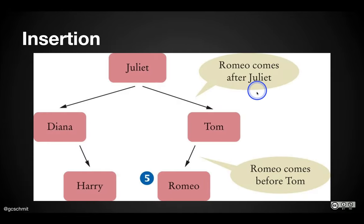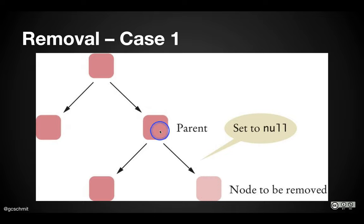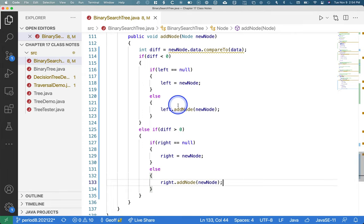Remove is a bit more complicated. We're going to handle three separate cases of removal, starting with the easiest and working up to the most challenging. In all of these cases, we still have to actually find the node we want to remove — that part of the algorithm is similar to what we just wrote. The easiest case: if we find the node to be removed and that node has no children, we simply take the node's parent and set either its left or right reference to null and the node is gone.